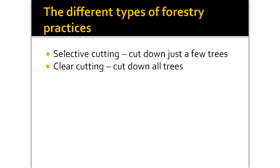The next part was looking at different types of forestry practices — selective cutting and clear cutting. Selective cutting is when you cut down just a few trees, whereas clear cutting is cutting down all the trees. Think about going to a Christmas tree farm: sometimes they've clear cut a field because it's been used up and they're getting ready to replant with all new trees. In other sections, they'll do selective cutting — maybe cutting the six-foot trees this year but leaving the five-foot trees for next year to protect the animals living there.